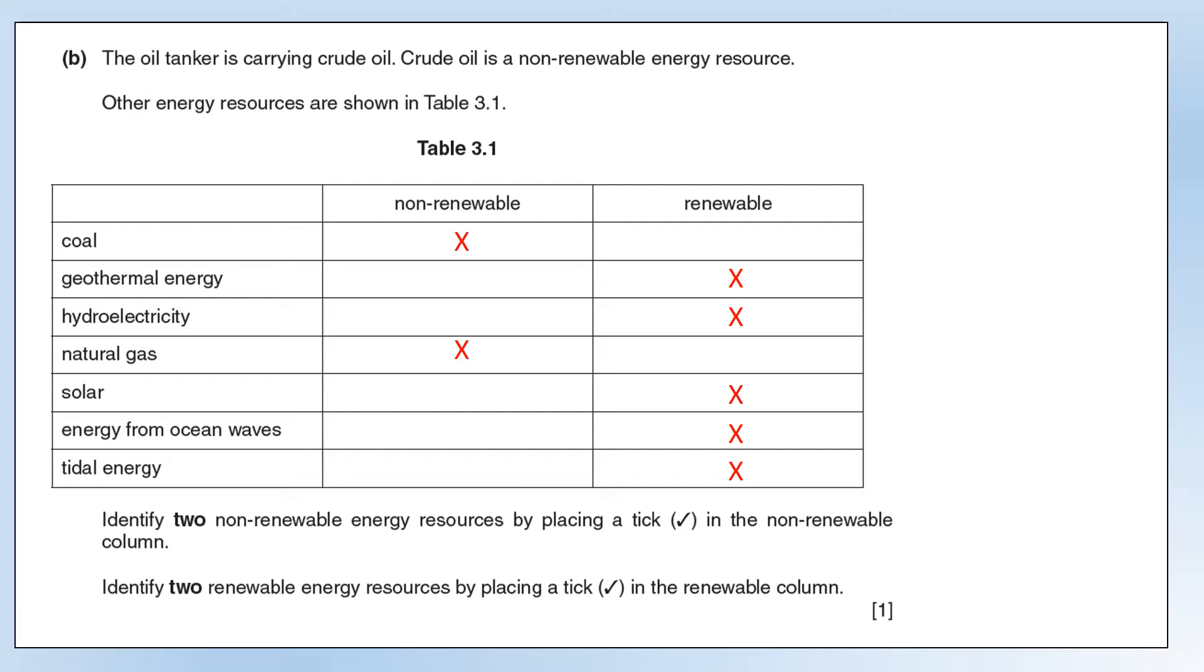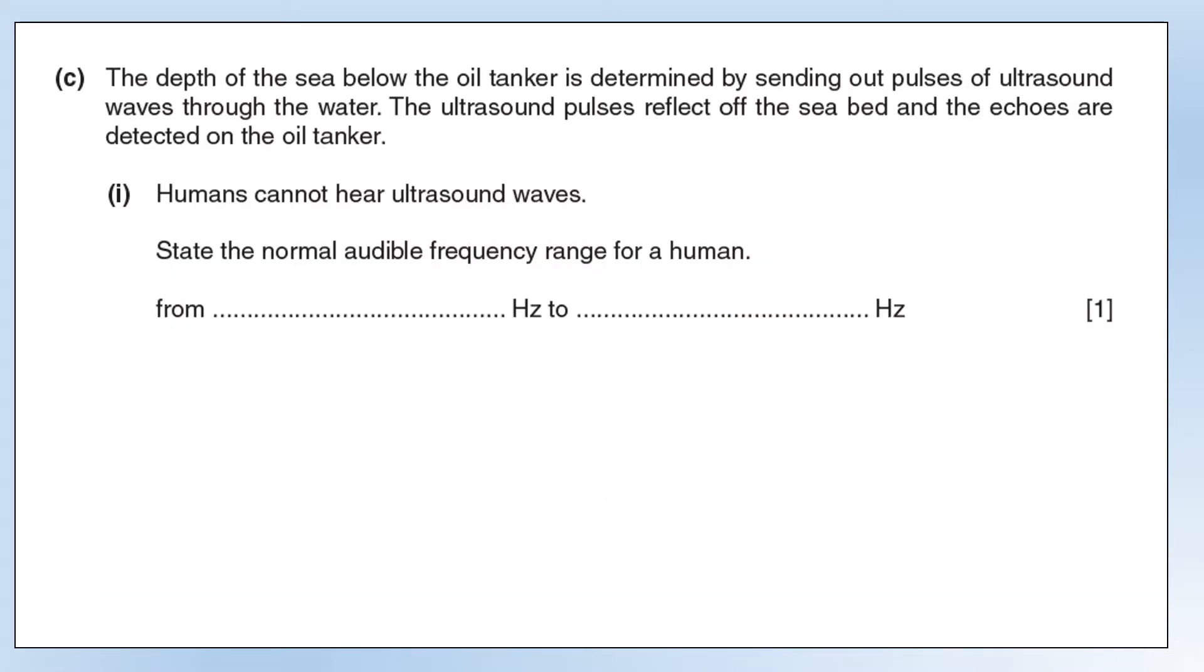So the depth of sea below an oil tanker is determined by sending out pulses of ultrasound through the water. The ultrasound pulses reflect on the seabed, and the echoes are detected on the water tanker. Humans cannot hear ultrasound waves. State the normal audible frequency range for a human. The lowest we can hear is 20 hertz, or 20 cycles per second, and the highest we can hear is 20,000 hertz. And ultrasound is anything that's over 20,000 hertz.